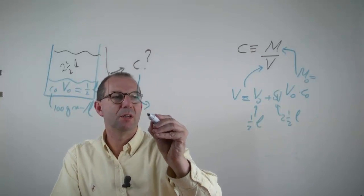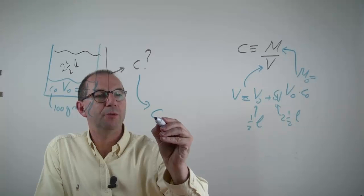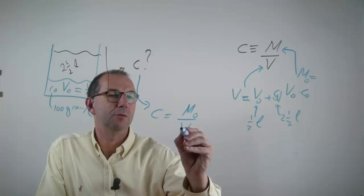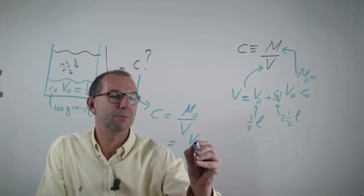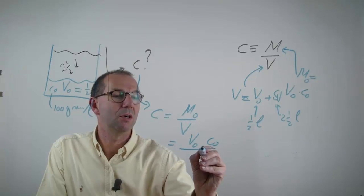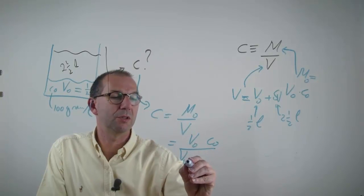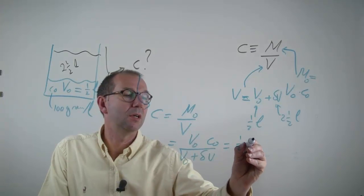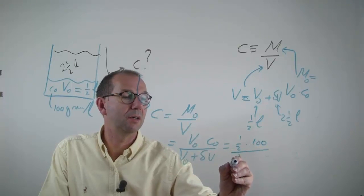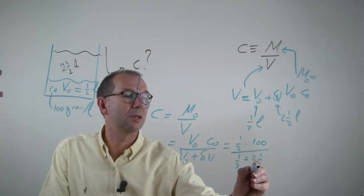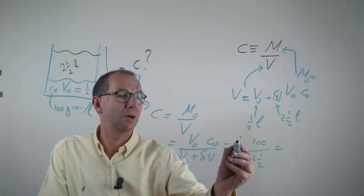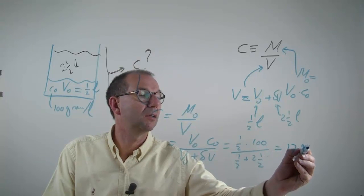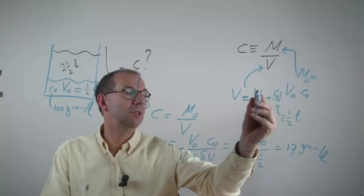Thus I can answer this question relatively straightforwardly. After adding water, C equals M0 over V_new, which is V0 times C0 divided by the new volume V0 plus delta V. This equals half times 100 divided by half plus two and a half, so that is 50 over 3, which is approximately 17 grams per liter. We diluted the substance.